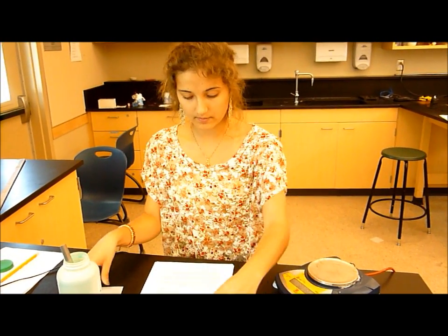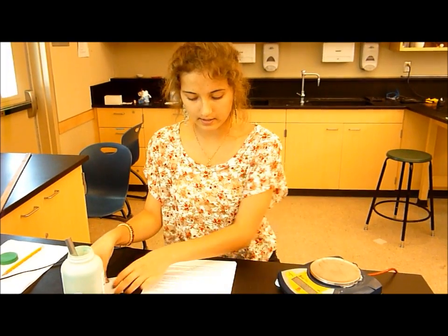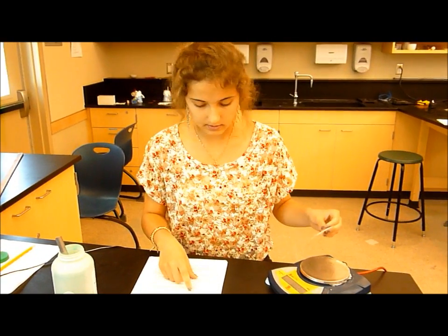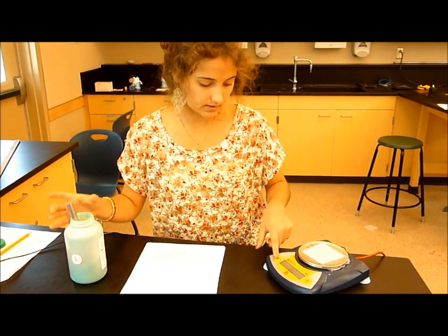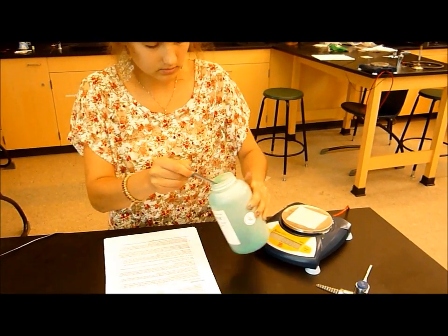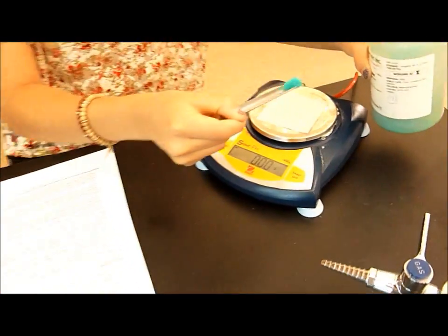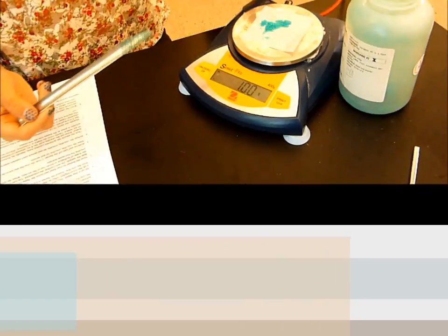Then, obtain about one gram of the unknown copper chloride hydrate, and place it in the crucible. So first, you have to put your filter paper on top of the scale, zero it, and then start putting your copper chloride until you get one gram. Oh, exactly one.